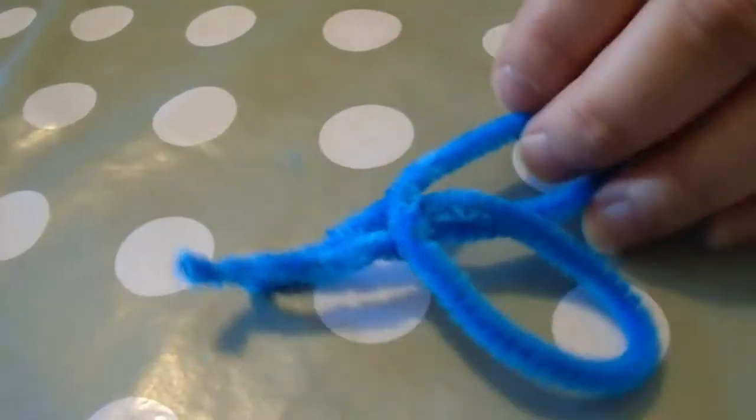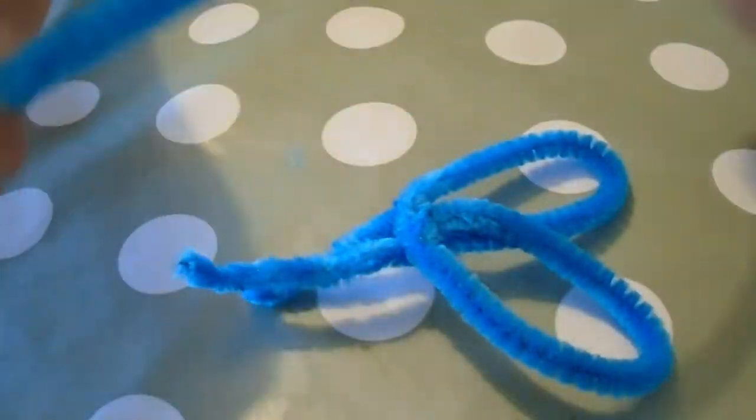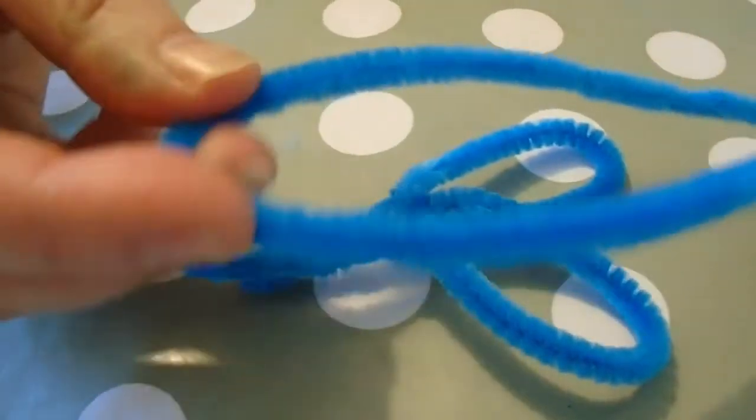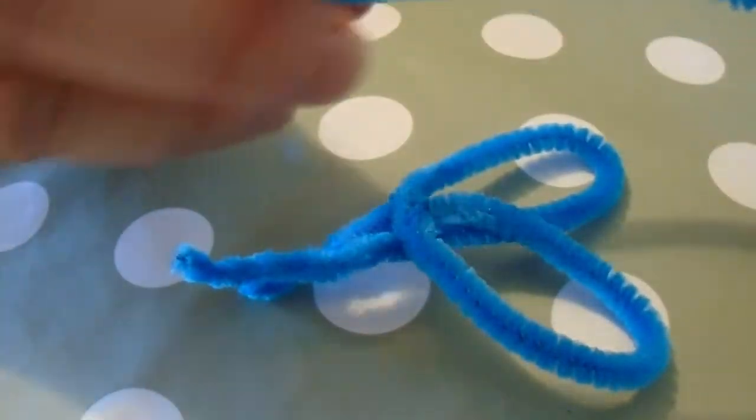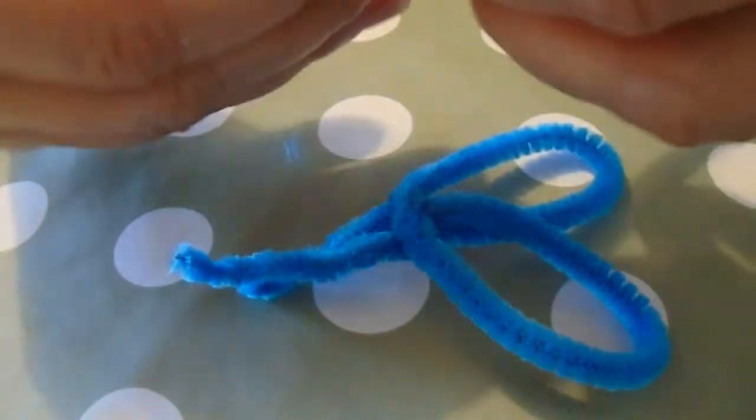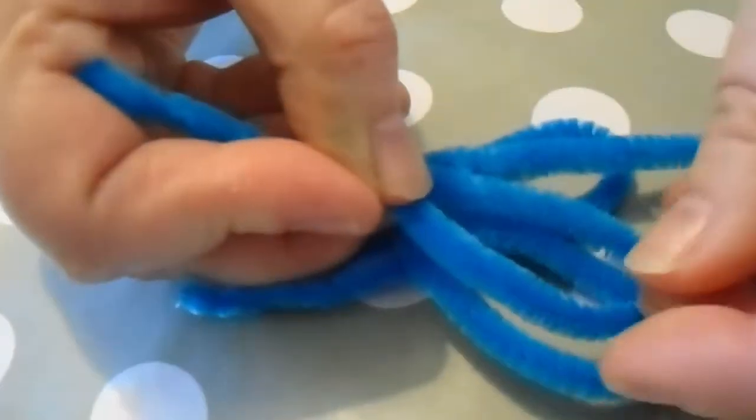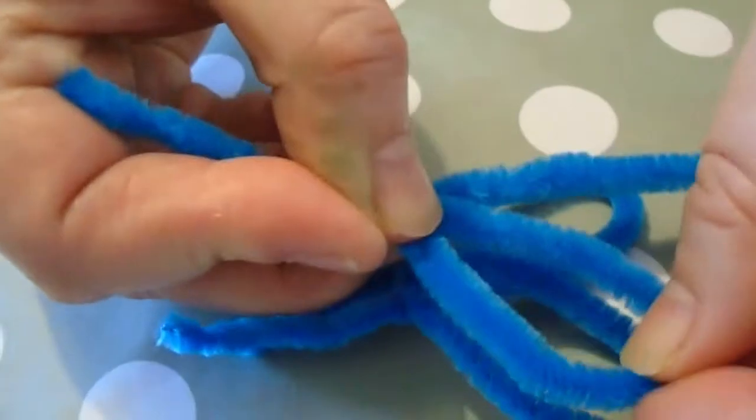Once you've done this, you need to make the wings. Now here's one set of wings, but you need to make two, so I'll show you how to make them. You need to fold the pipe cleaner roughly in half so you can see where the middle is. You then bend in one side like this. I'll check they're roughly the same size. Yes, they are.